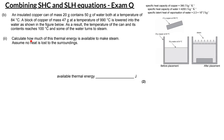The second part asks us to calculate how much of this thermal energy is available to make steam. First, we figure out how much energy it takes to heat up the water to 100 degrees Celsius, then how much energy it takes to heat up the copper can to 100 degrees Celsius. Add those two together to get the energy required to bring everything up to 100 degrees. The difference between that and the energy released by the copper block gives the amount of energy given to the water to become steam.